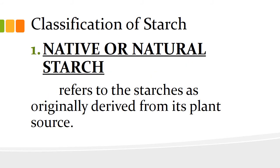Now, let's move on to the classification of starch. The parts of plants that store most starch are seeds, roots, and tubers. Natural or native starch means there is no alteration or modification that has happened to the starch — it refers to the starches as originally derived from their plant source.